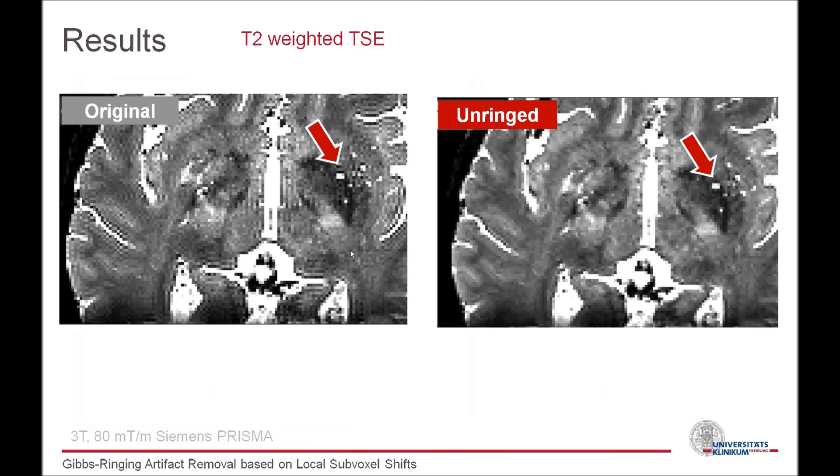Last but not least, we would also like to present an example from a structural T2-weighted image. You can see the strong artifacts around the CSF and around the lesions. As you can see, the method removes the artifact almost completely with minimal smoothing. The small sharp objects are almost left untouched.